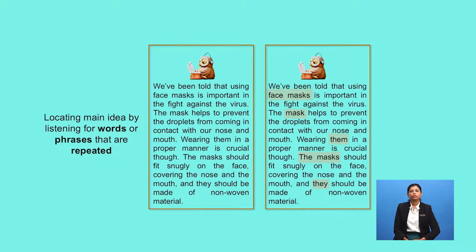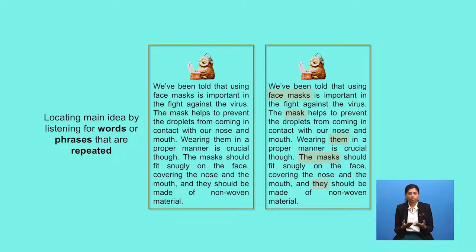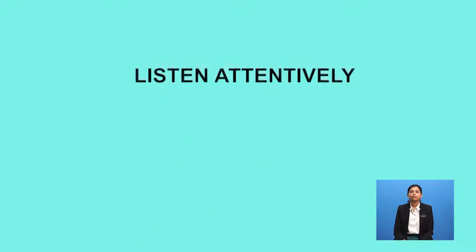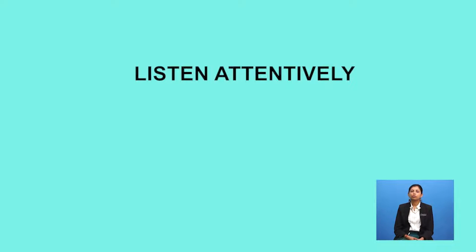Another way of locating the main idea is by listening for words or phrases that are repeated. Notice how the word 'mask' is repeated throughout? Sometimes the word is substituted by its pronoun — in this case, 'they' and 'them.' These signals show supporting ideas are around the central idea. Of course, it is easier to identify the main idea and supporting ideas when reading, which is why it's crucial to listen attentively.